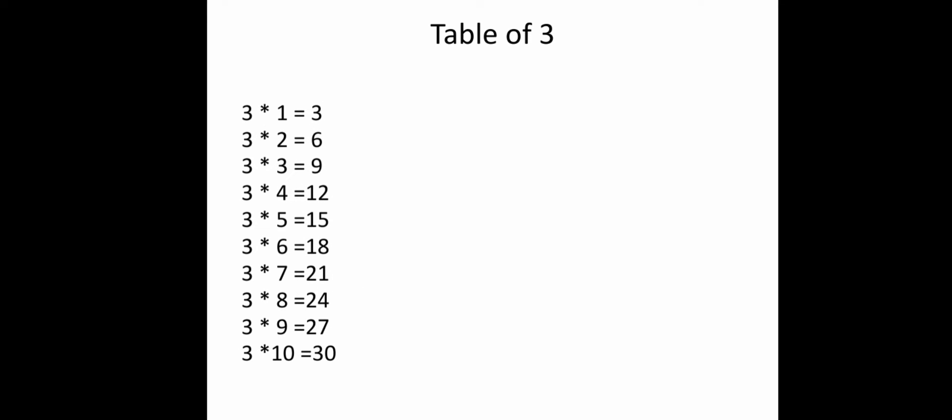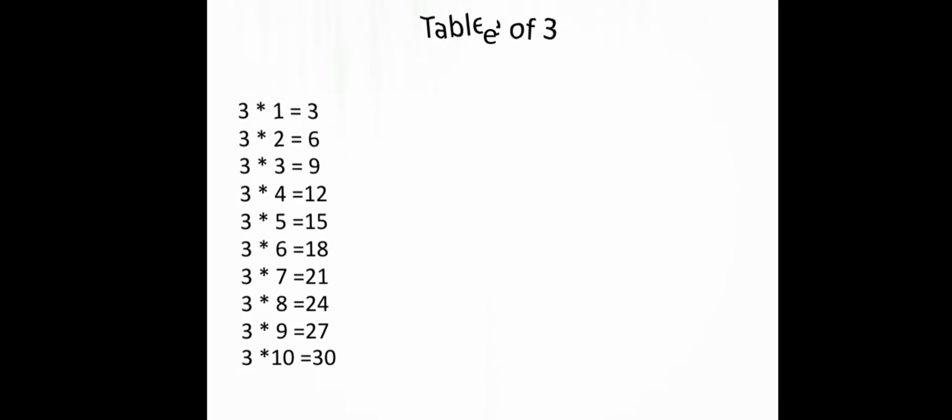Table of 3: 3 1s are 3, 3 2s are 6, 3 3s are 9, 3 4s are 12, 3 5s are 15, 3 6s are 18, 3 7s are 21, 3 8s are 24, 3 9s are 27, 3 10s are 30.